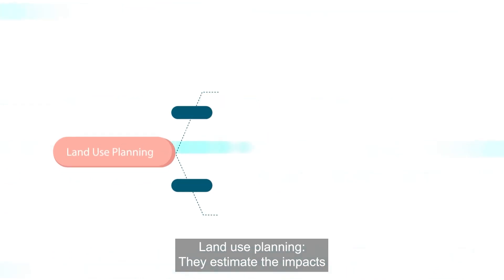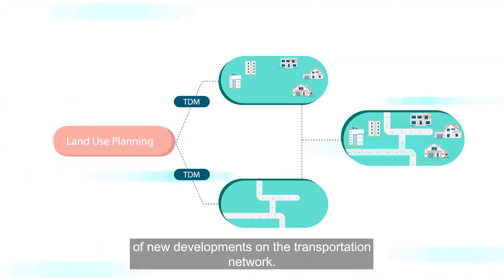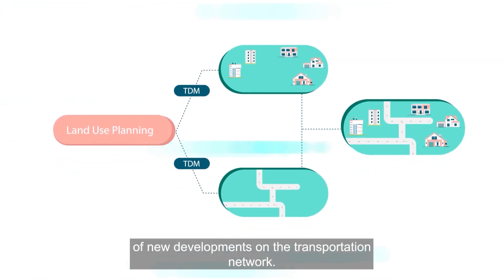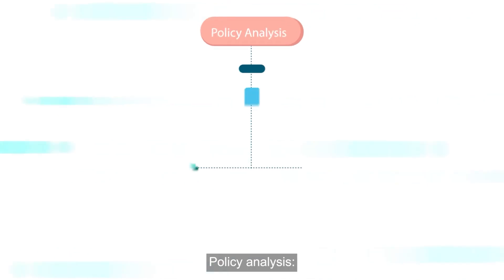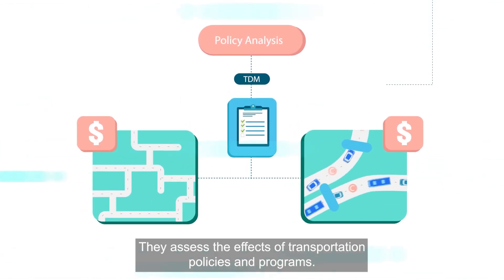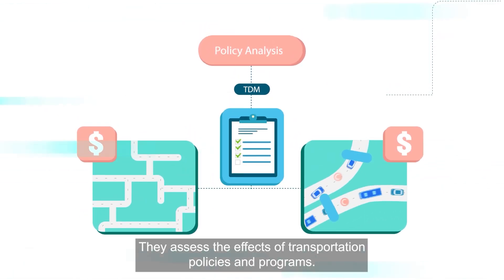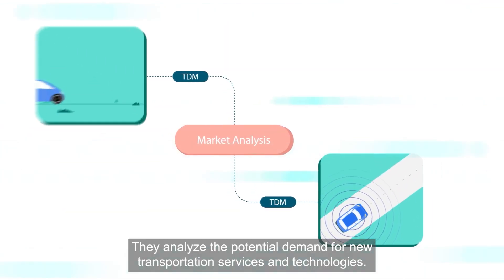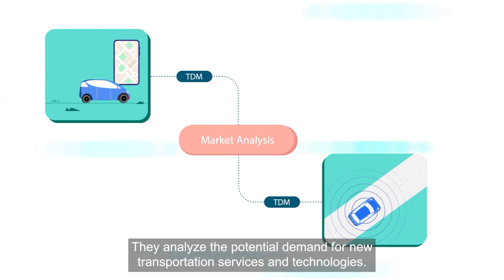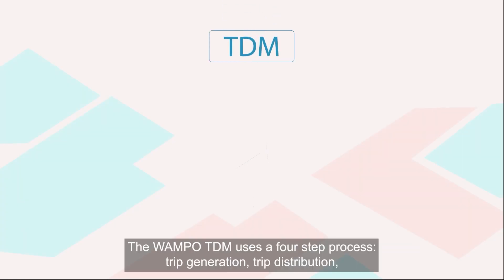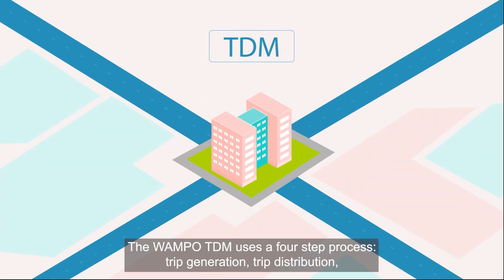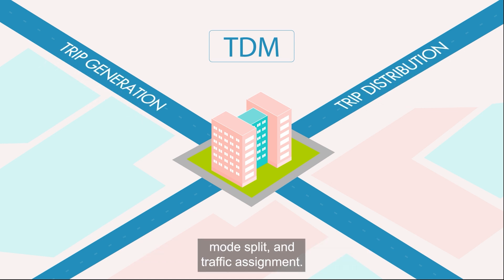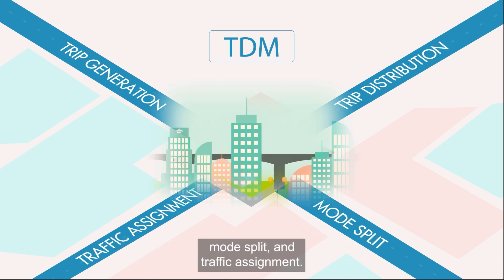Land use planning: they estimate the impacts of new developments on the transportation network. Policy analysis: they assess the effects of transportation policies and programs. Market analysis: they analyze the potential demand for new transportation services and technologies. The WAMFO TDM uses a four-step process: trip generation, trip distribution, mode split, and traffic assignment.